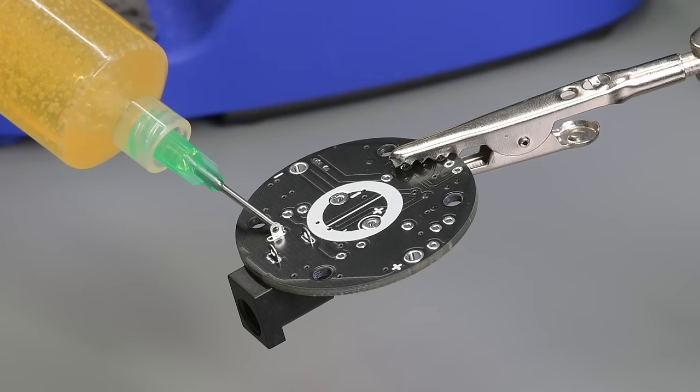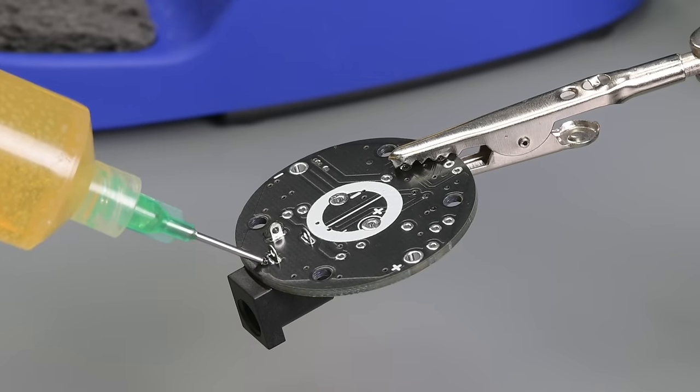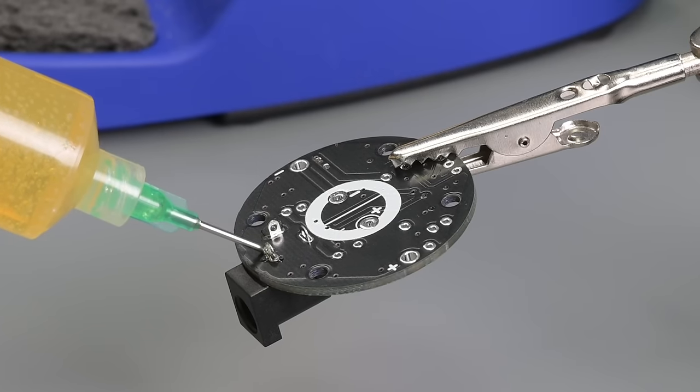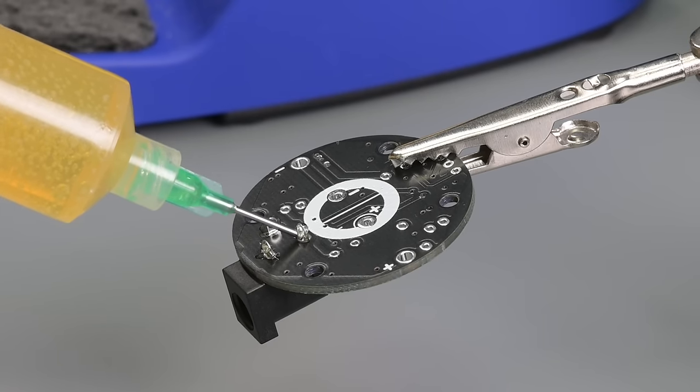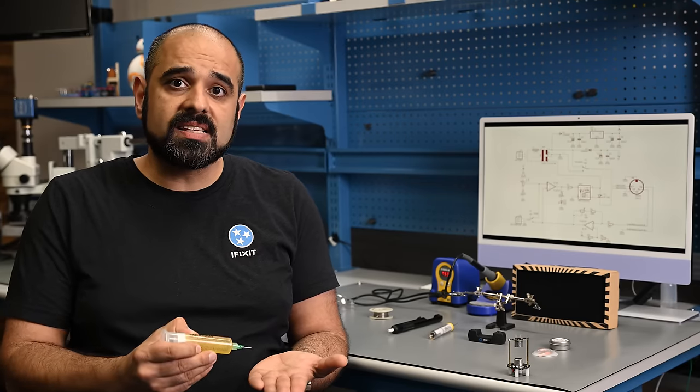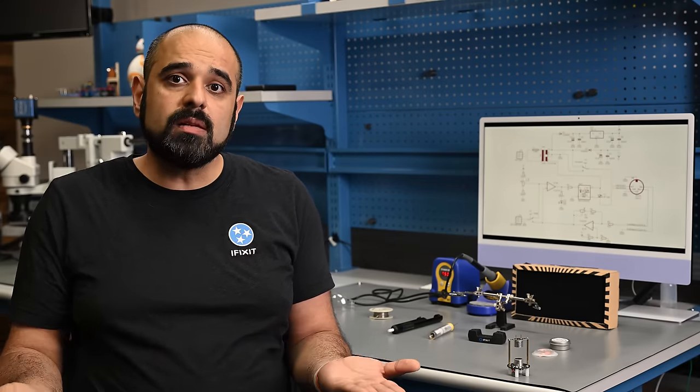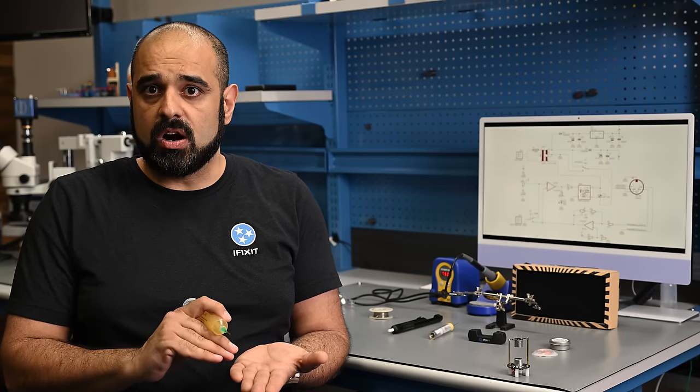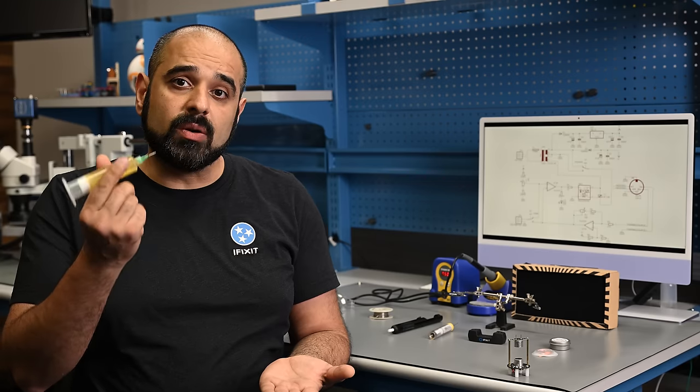Next up I want to place some flux on the contacts I'd like to solder. Solder always wants to move towards and bond with copper. The only reason it doesn't is because of a thin layer of oxidation that occurs when copper is exposed to air. That's where flux comes in. Flux cleans that contact removing the oxygen layer and allowing a clean bond between the solder and the copper contact. Not using flux will create a brittle and weak connection.